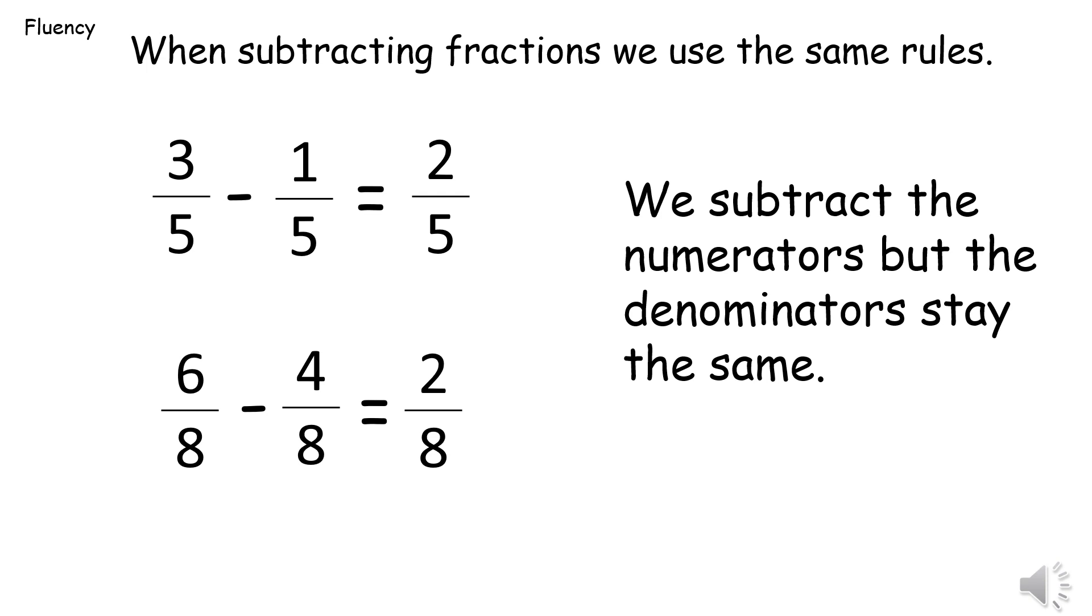So we have just learnt that when adding fractions we add the numerators together but the denominators stay the same, and those rules stay the same for subtracting fractions. So here we've got three fifths take away one fifth and the answer will be two fifths because we do three take away one equals two but the denominator at the bottom stays the same.